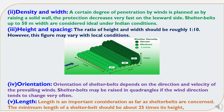The third characteristic is height and spacing. The ratio of height to width should be roughly 1 to 10, however this figure may vary depending on local conditions. As shown in the picture, if the shelter belt height is 10 meters, the length should be 100 meters — meaning their ratio should be 1 to 10.